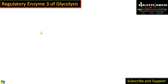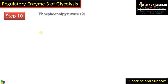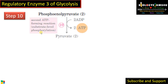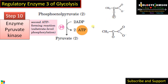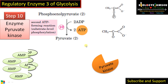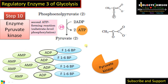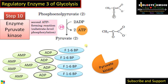Regulatory enzyme 3, the final regulatory enzyme of glycolysis, is in step 10 — the final step — where phosphoenolpyruvate is converted to pyruvate. Here ATP is formed, as the phosphate is used to synthesize ATP. The enzyme is pyruvate kinase. Pyruvate kinase is activated by AMP and ADP, and also by fructose 1,6-bisphosphate, which is the product of the rate limiting step.